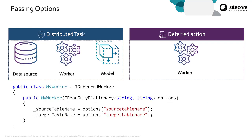All of these elements also support passing options into them. To support accepting options, an element should accept a read-only dictionary of string-string. The options are defined when we register the task with the engine. This allows us to reuse our different task elements without having to change the code, because we could, for example, be passing in the name of the table we want to be operating on in storage, as opposed to fixing it as a static.